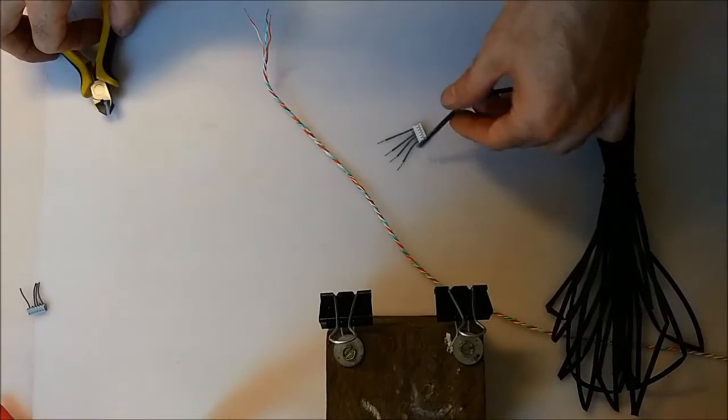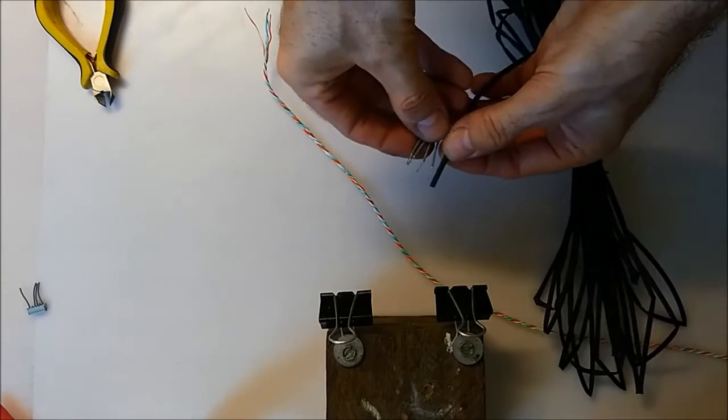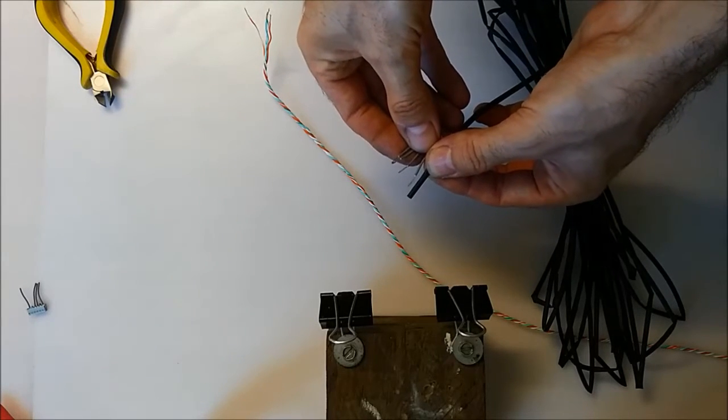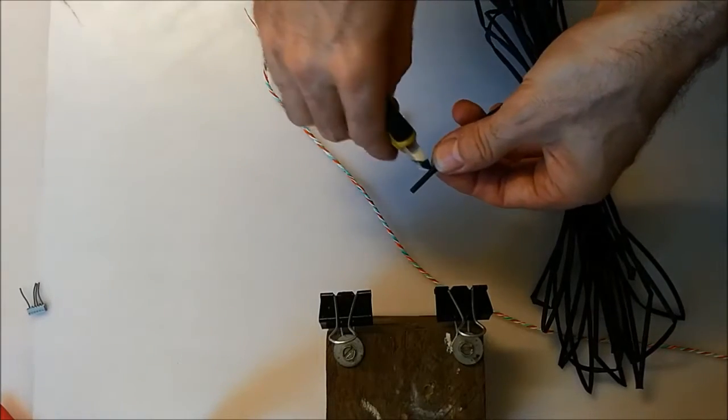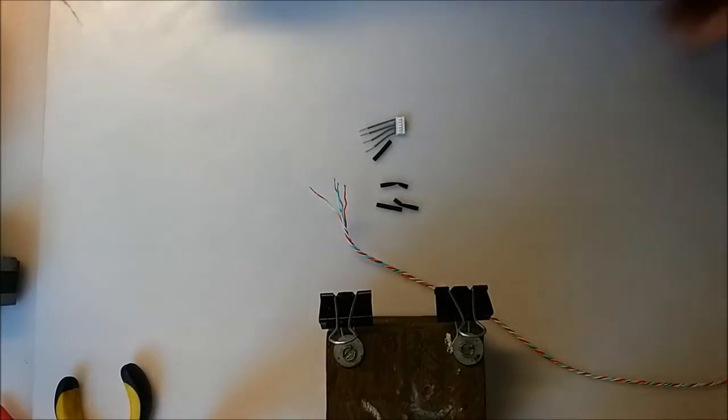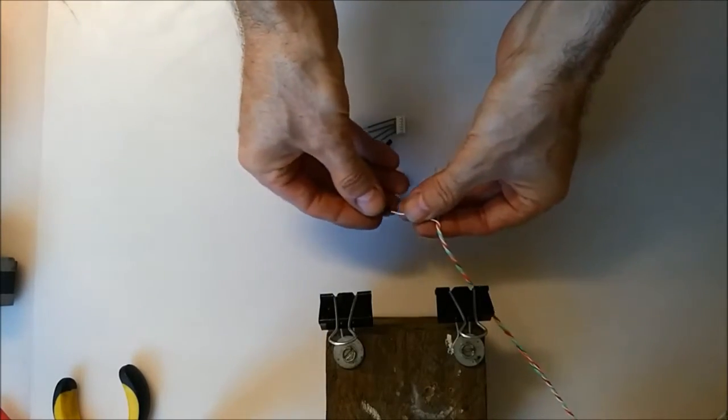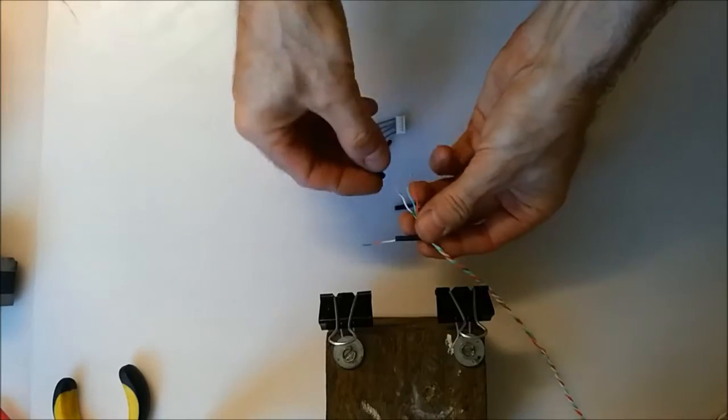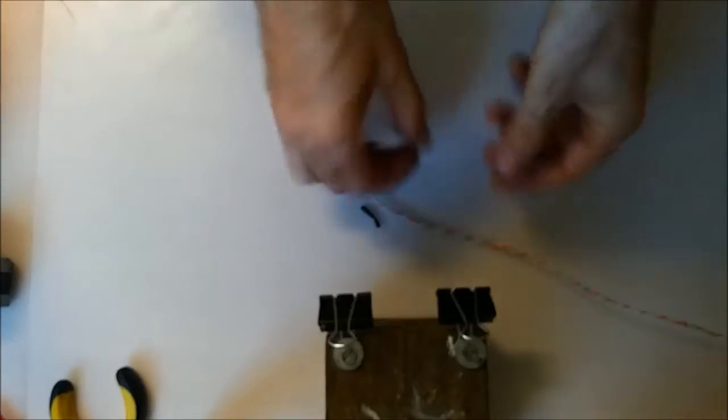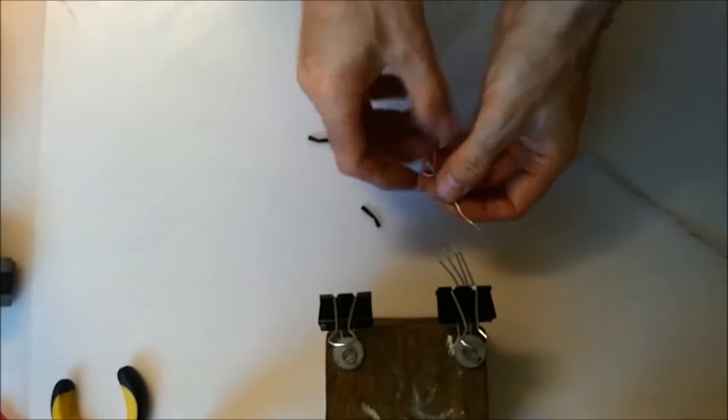I'll grab some heat shrink next. We're going to cut probably about 15 to 20mm just to cover the bare wire. We're going to cut 4 of those pieces. Next we're just going to feed those bits of heat shrink onto the wire, probably just do one at a time so they don't fall off.